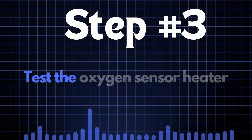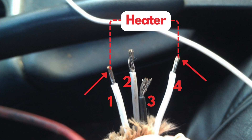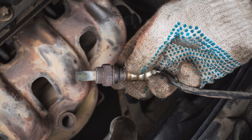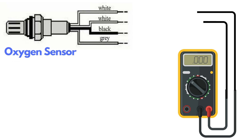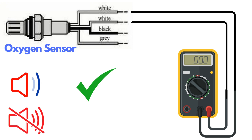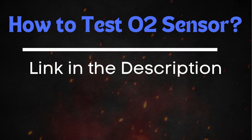Step 3: Test the oxygen sensor heater. Oxygen sensors typically have four wires, and two of these wires — usually of the same color — are dedicated to the heater circuit. Over time, the heater circuit can burn out and stop functioning properly. To test the heater circuit, you'll need a multimeter. Set the multimeter to check for continuity, then place the probes on the two heater wires. If the circuit has continuity, the multimeter will beep, indicating the heater is functioning. If there's no beep, the heater circuit is broken and you'll need to replace the oxygen sensor.